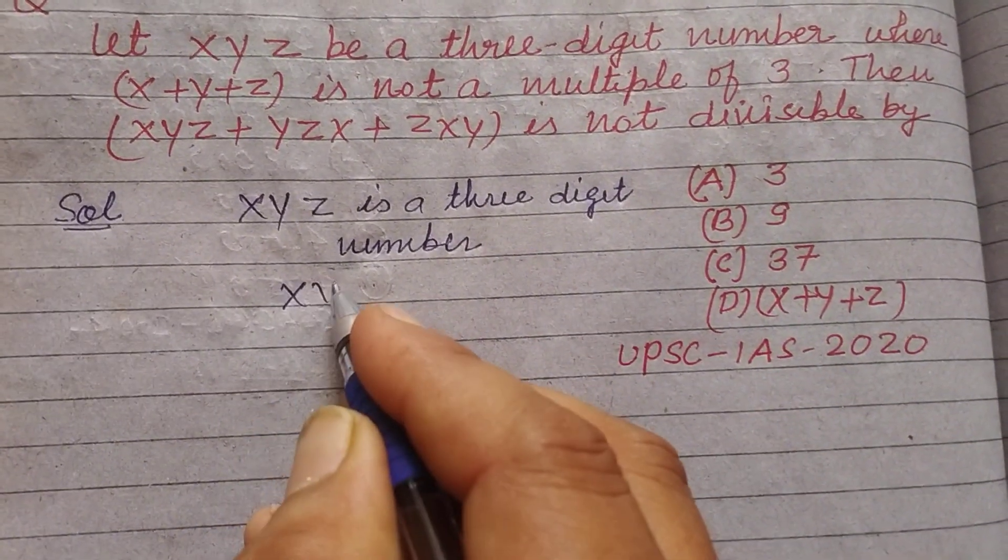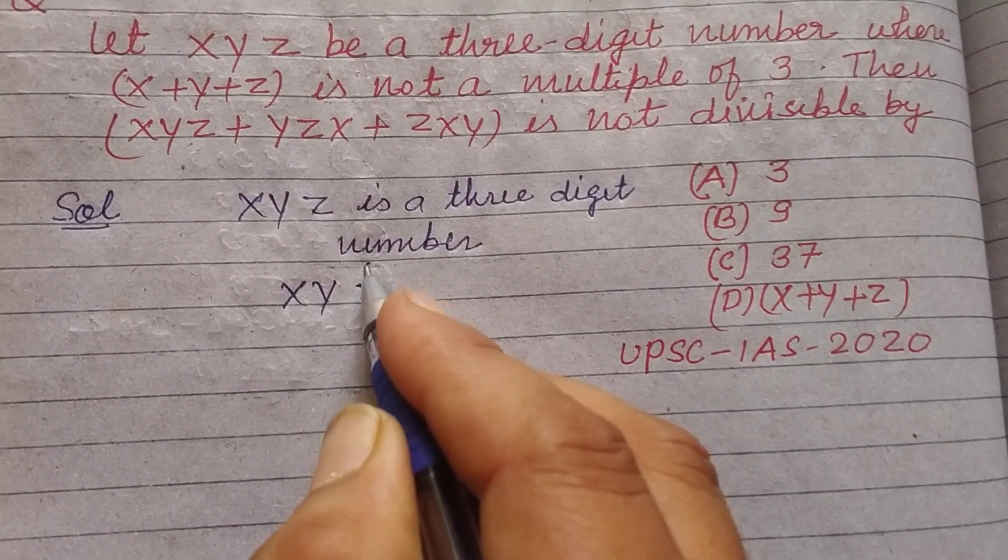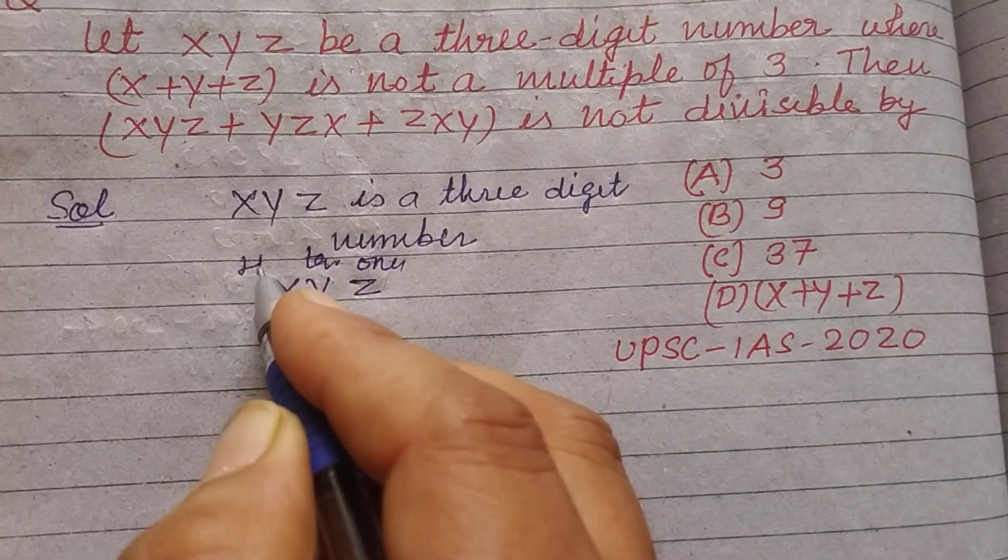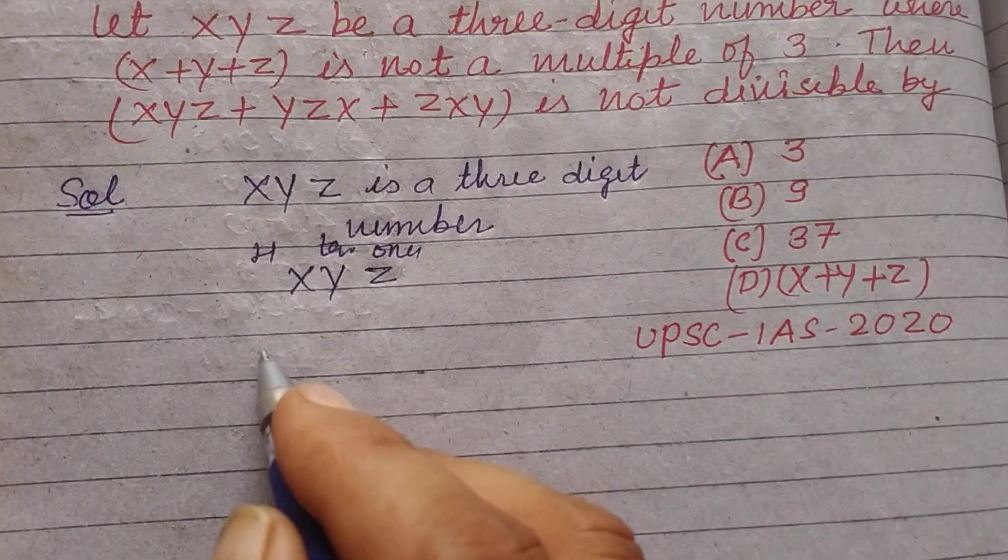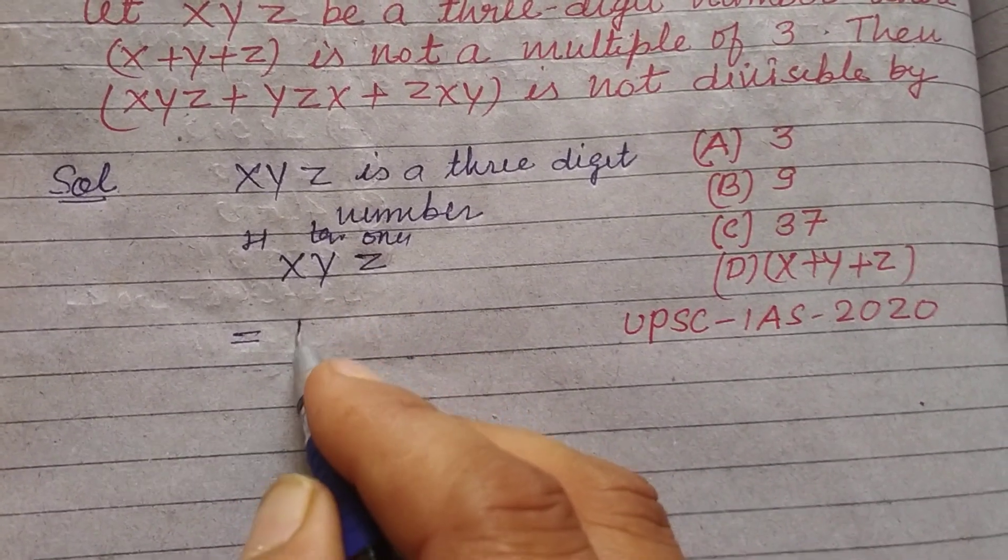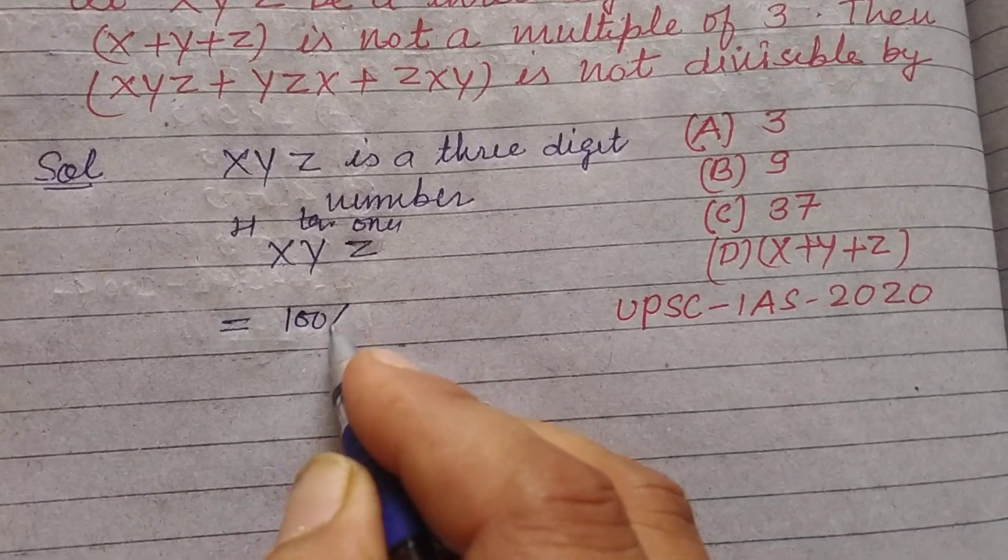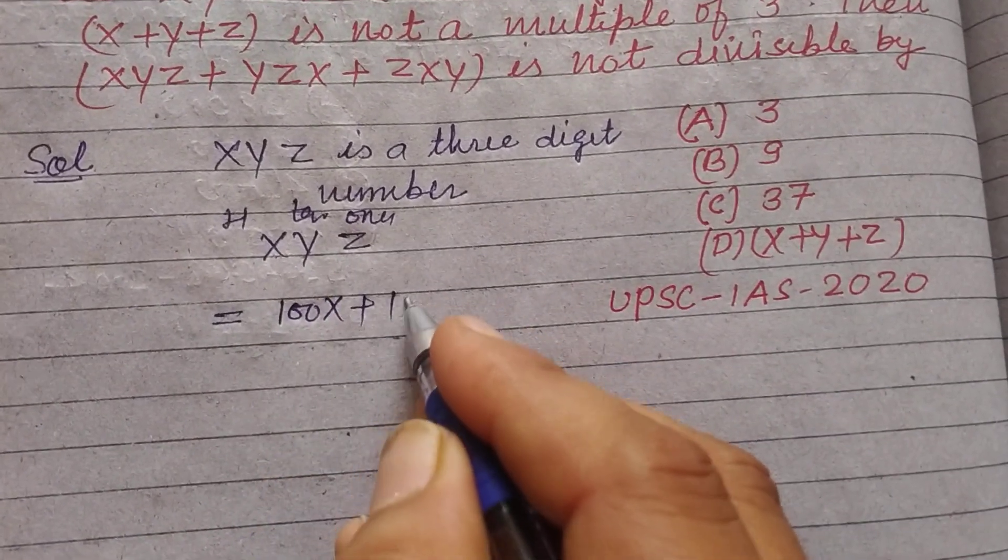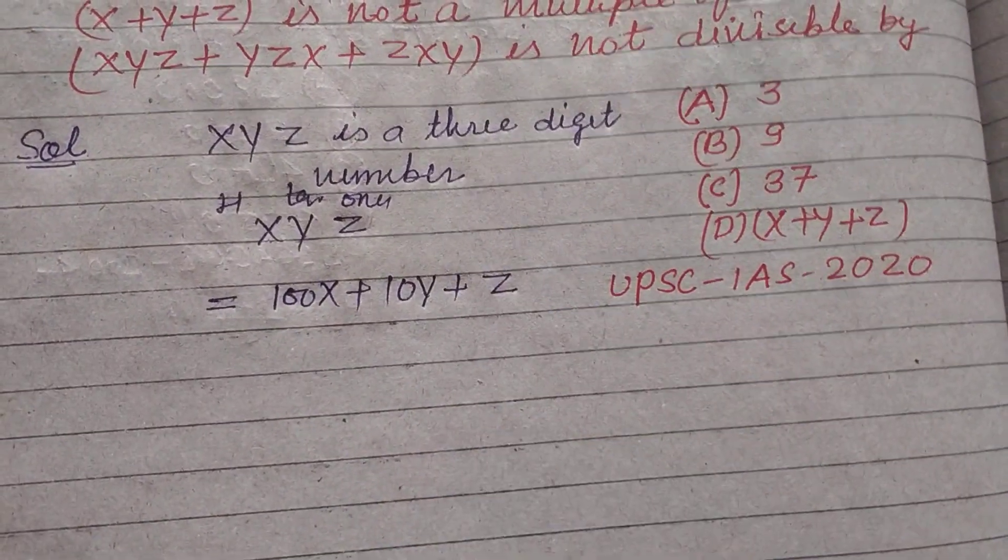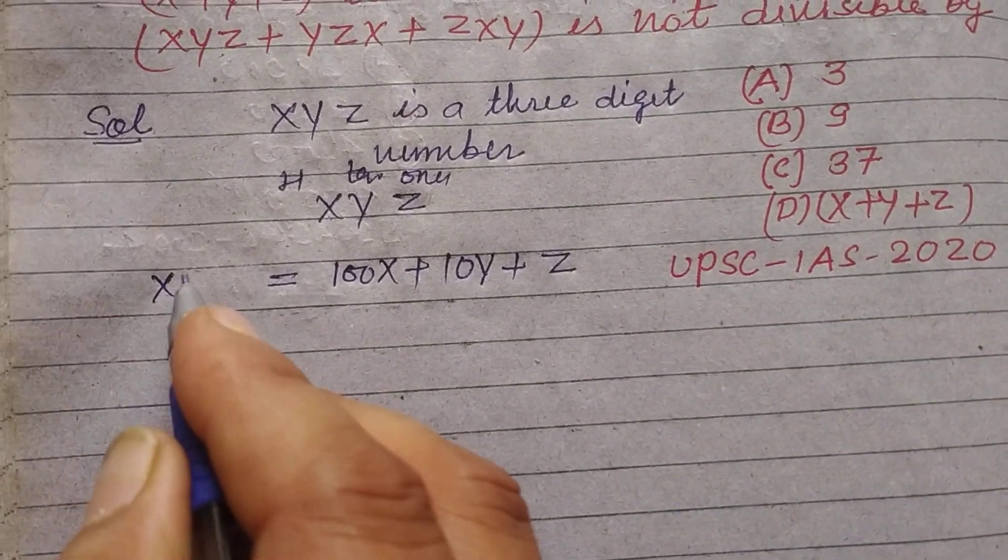When we make their place value, this is at ones place, tens place, and hundreds place. So writing this number in expanded form, we write the place value of respective digits: x at 100 place so 100x, plus y at 10 place so 10y, and z at 1 place so z. xyz can be written in the form of this.